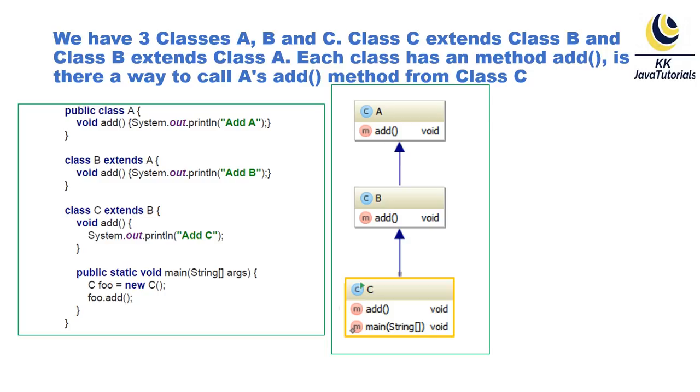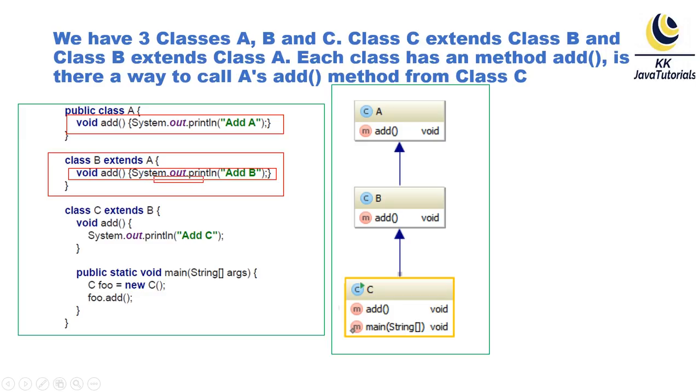Now it's possible for Class B or C to call their superclass add() method by using super.add() call. So here you can see if you want to call superclass A's add() method from subclass B, then we have an add() method in the subclass. From here we can write super.add(), then superclass A's add() method will be called from the subclass B.